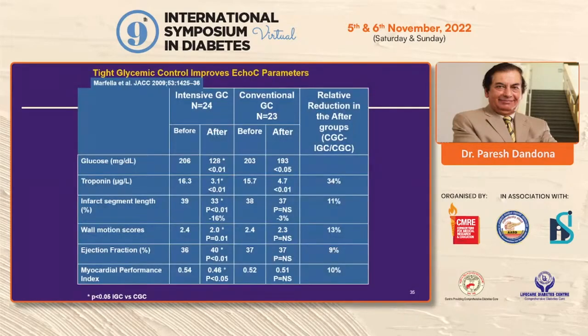With intensive glucose control using insulin, not only did glucose concentrations fall, but troponin levels came down, infarct segment length diminished, wall motion scores improved, ejection fraction improved, and the myocardial performance index improved.